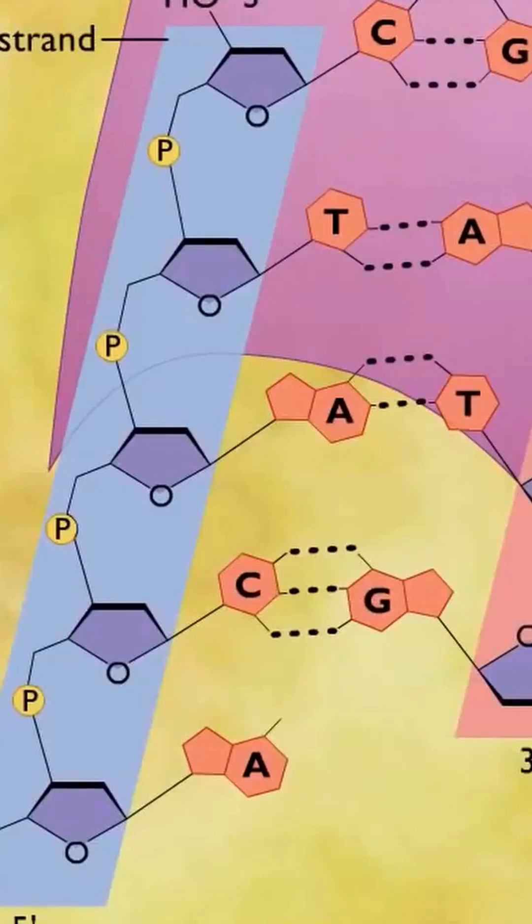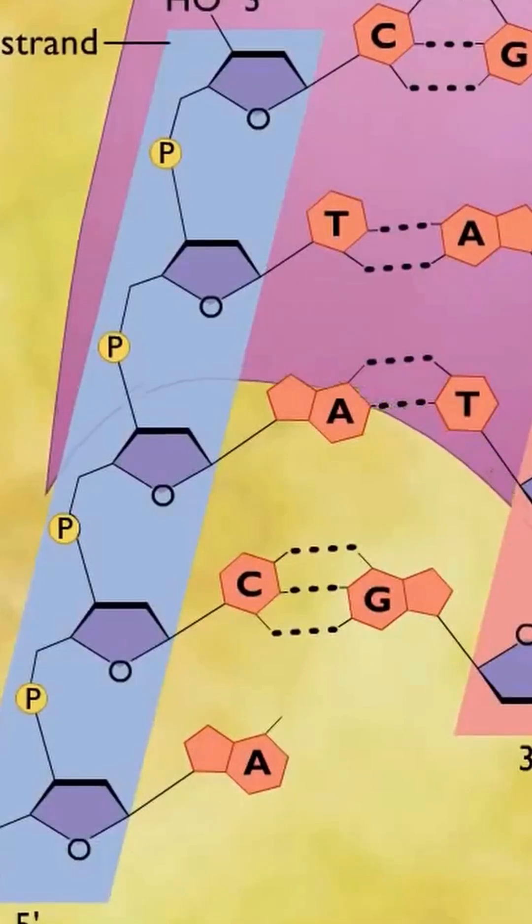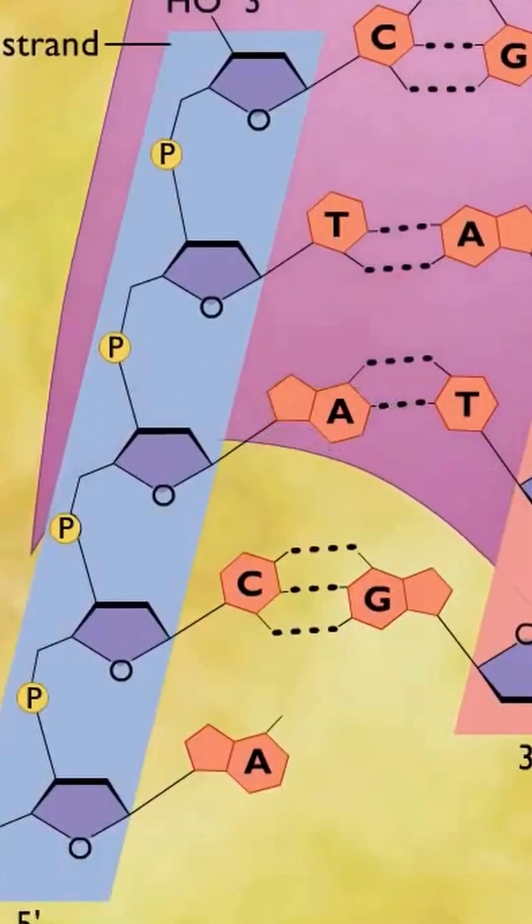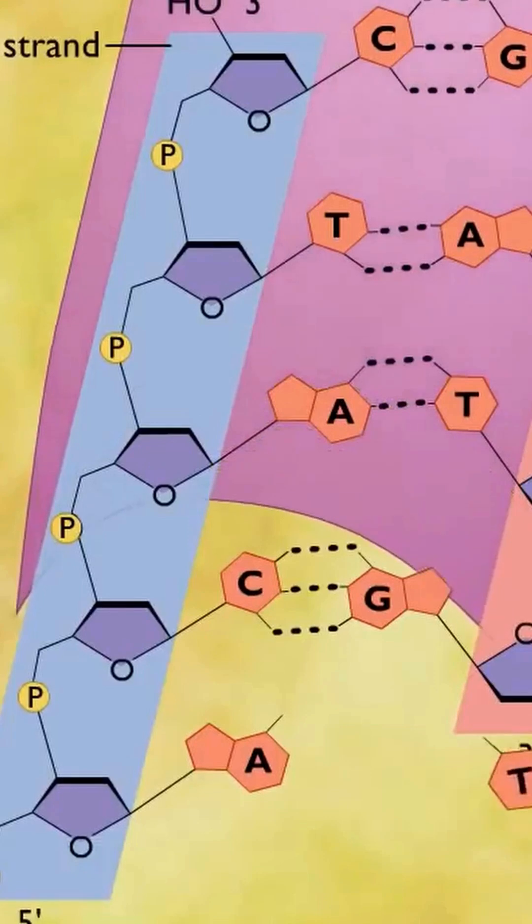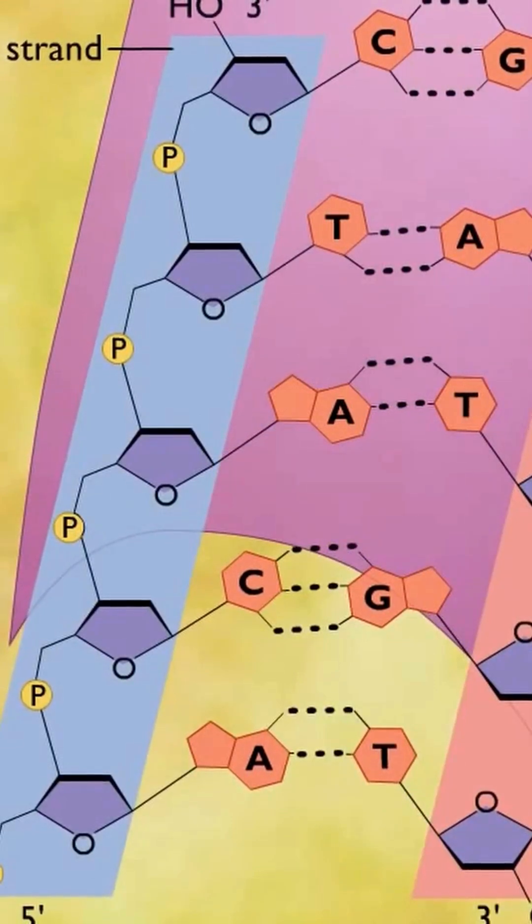DNA polymerase 3 is the major enzyme involved in DNA replication. DNA polymerase 3 can only add a nucleotide to the three-prime end of a pre-existing chain of nucleotides and it cannot initiate a nucleotide chain.